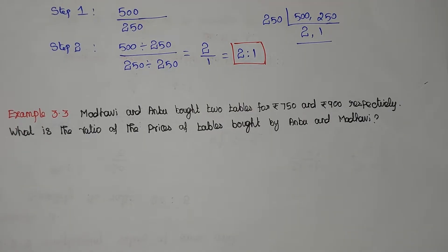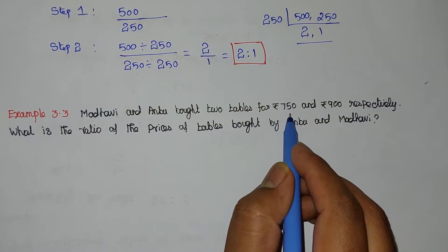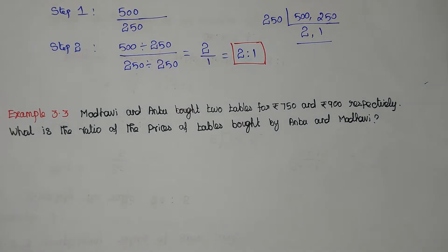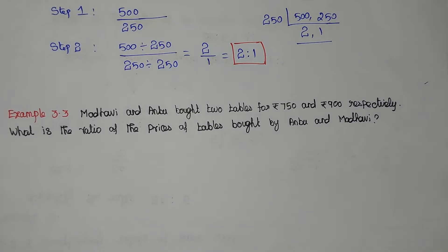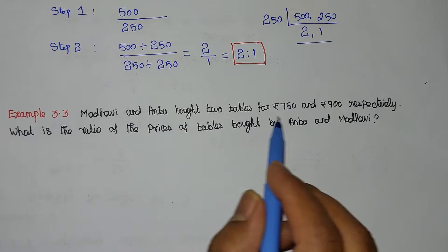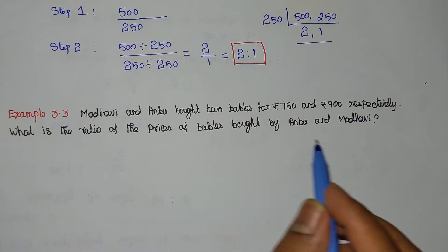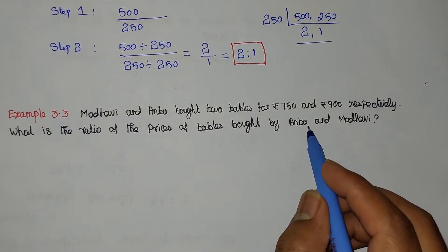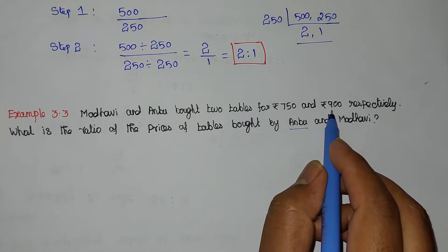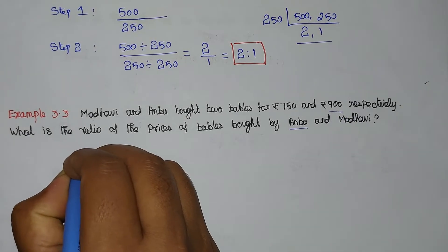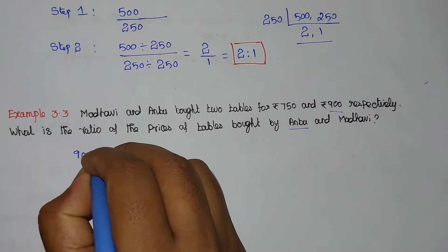Now we are going to solve problem 3.3. Madhavi and Anbu bought tables for 750 rupees and 900 rupees respectively. What is the ratio of the prices of tables bought by Anbu and Madhavi? Madhavi paid 750 rupees and Anbu paid 900 rupees.